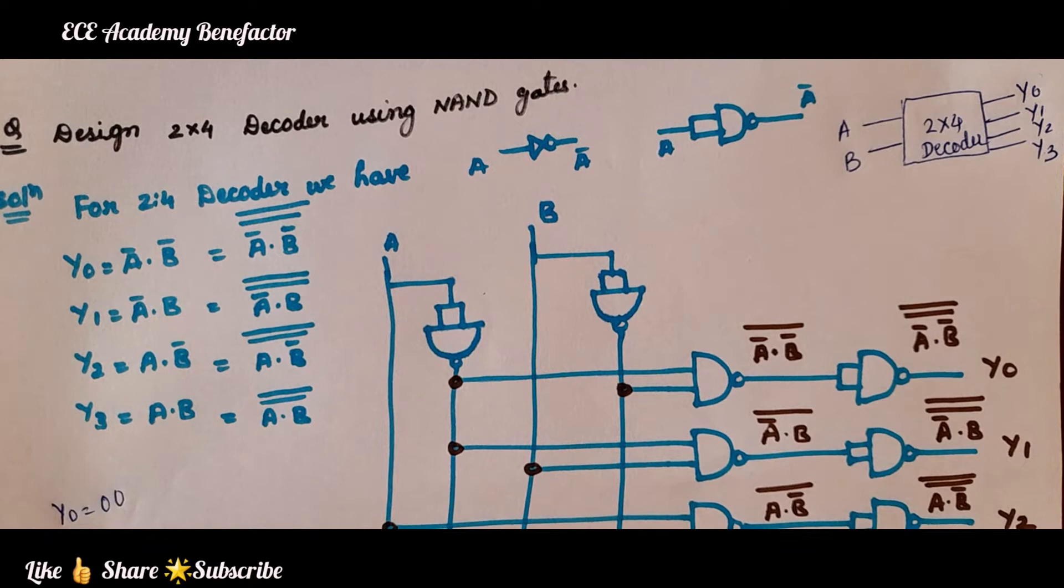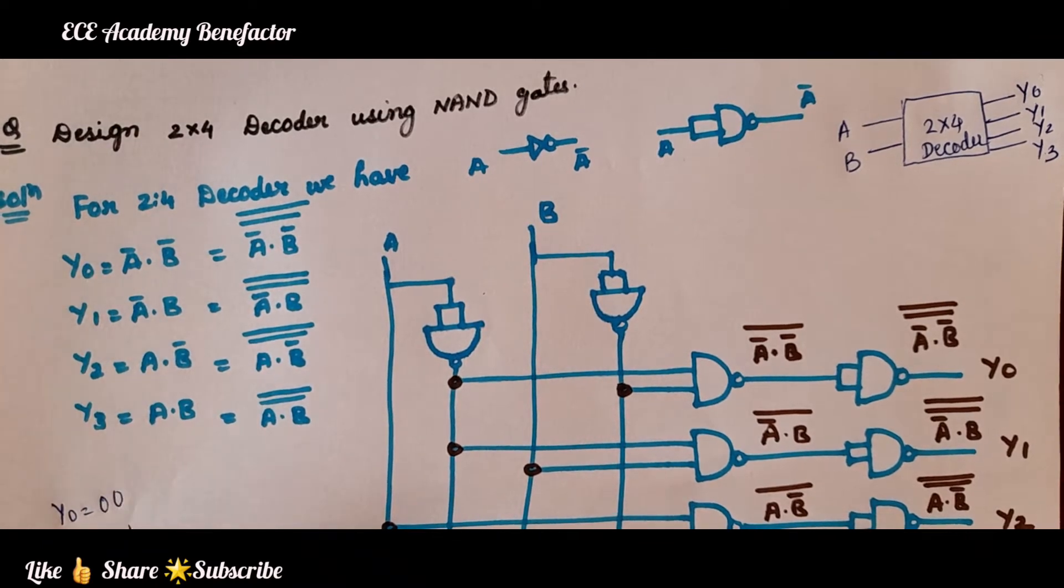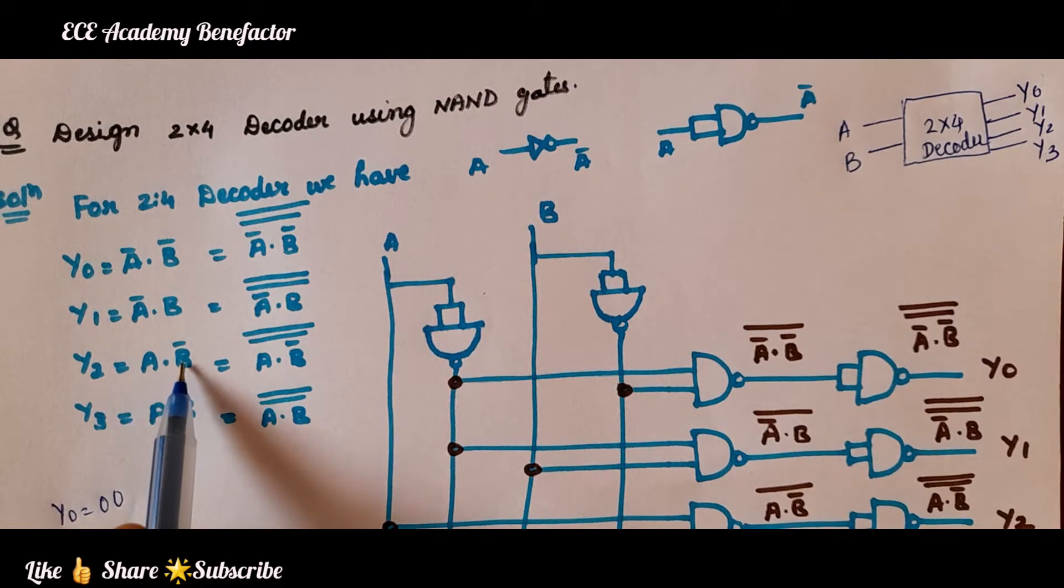y1, what is y1? 0 1, that is A̅·B. y2 is 1 0, which is A·B̅.